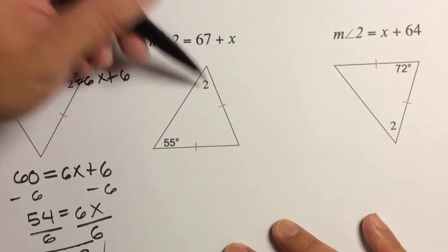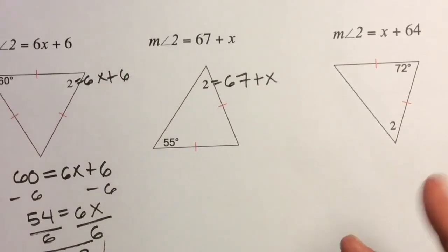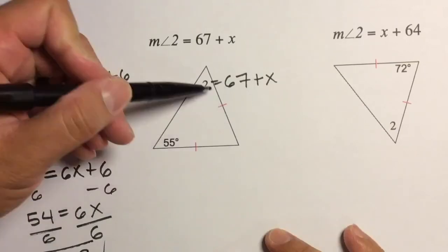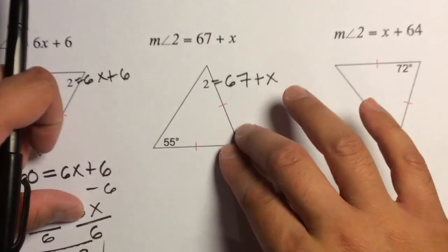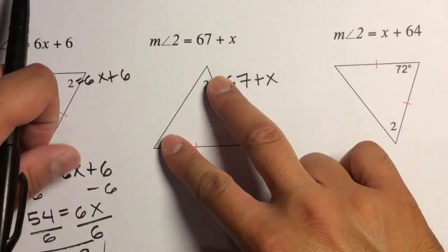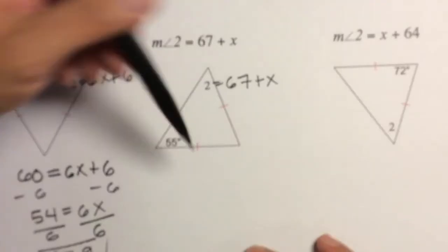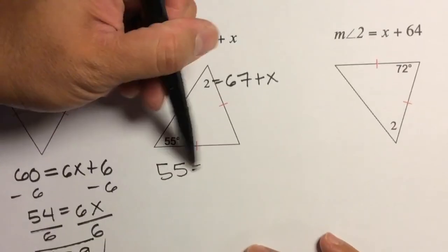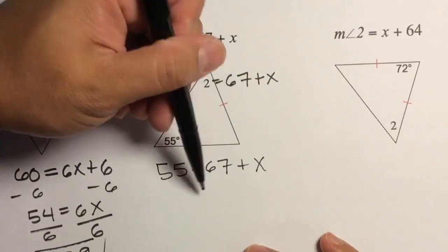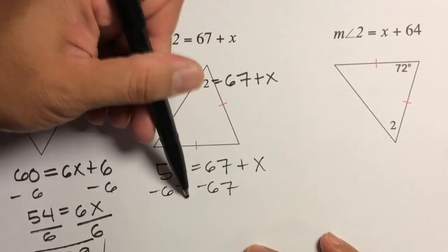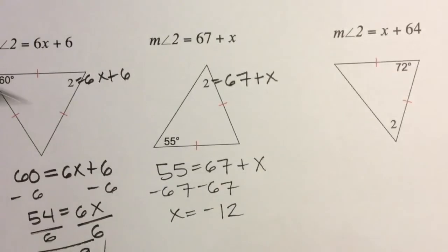This time angle 2 is represented by 67 + x. Let's classify the triangle — it's isosceles because of the two tick marks. Following the two congruent sides, they point to the base angles, so these two are the base angles and the vertex angle is the other one. That means the base angles are congruent, so we set 55 = 67 + x. Subtracting 67 from both sides gives x = −12.